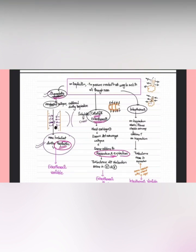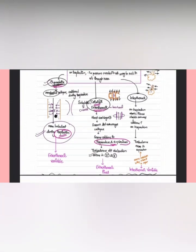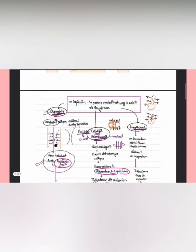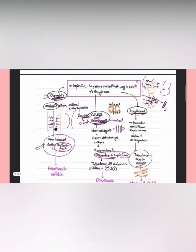In the subglottis, cricoid cartilage is present, and in the extrathoracic trachea, tracheal cartilage is present. Because of these hard cartilages, the airway cannot be pulled inward during inspiration or expiration, so the caliber remains the same in both phases — turbulence is equal in both. In the intrathoracic airway, surrounded by lung tissue, inspiration pulls the airway outward increasing its caliber, while expiration pushes it inward decreasing the lumen, causing more turbulence on expiration.